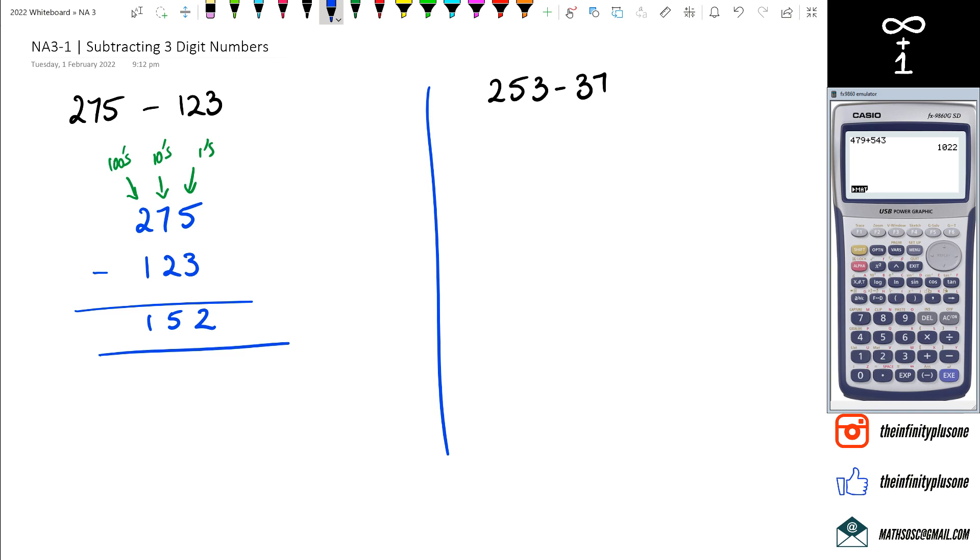Now you might be wondering, if I do it the other way, I'm still going to get the same answer. Yes, you're right. In this case it works out. However, in the next cases, it's not going to work out. That's why you always start subtracting from the ones column, then to the tens, and then to the hundreds.